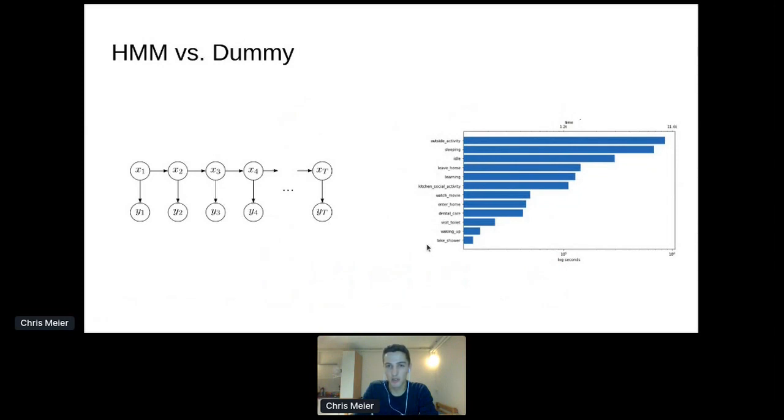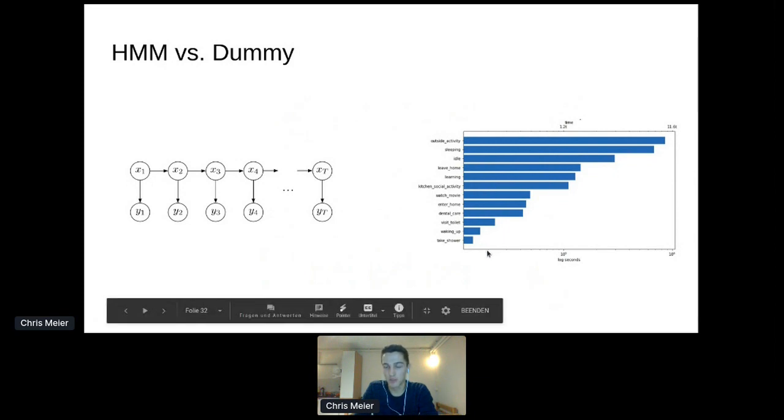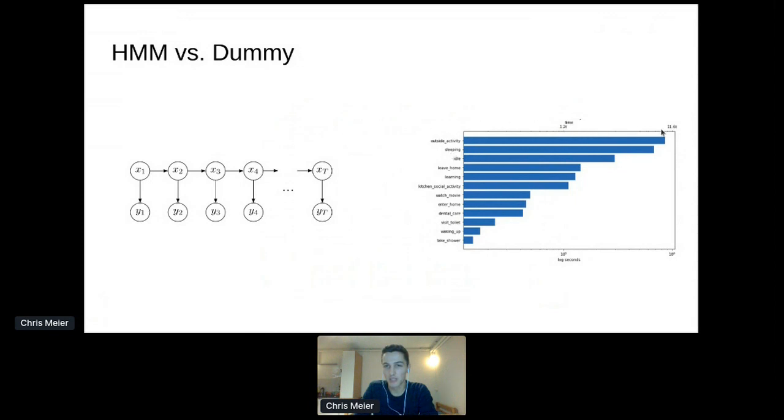I then compared this model to a dummy model. You do this because you want to see if your model has learned anything. The dummy model just sampled from my observed activity distribution. So here we see all the activities and their durations. Outside activity and sleeping are the most dominant activities, and the model would just sample from this distribution. It just says a lot of time, hey he's outside or he's sleeping, and it will get a pretty decent accuracy. So how did my model perform? Well, it was worse than this model.